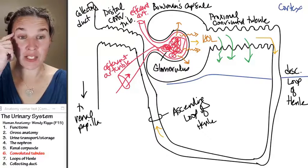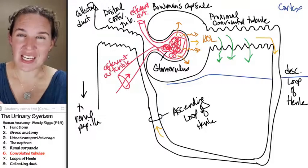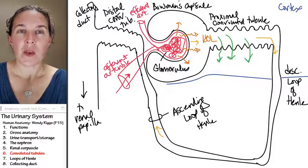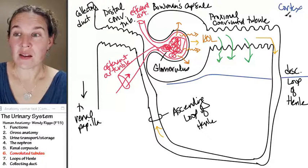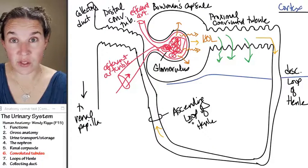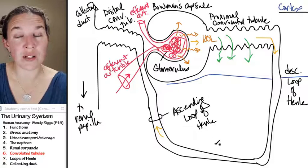Now think for a second. If I'm looking at a slide of kidney, where am I going to see these guys? You're going to see them in the cortex. You're not going to see distal convoluted tubules or proximal convoluted tubules in the medulla of the kidney.